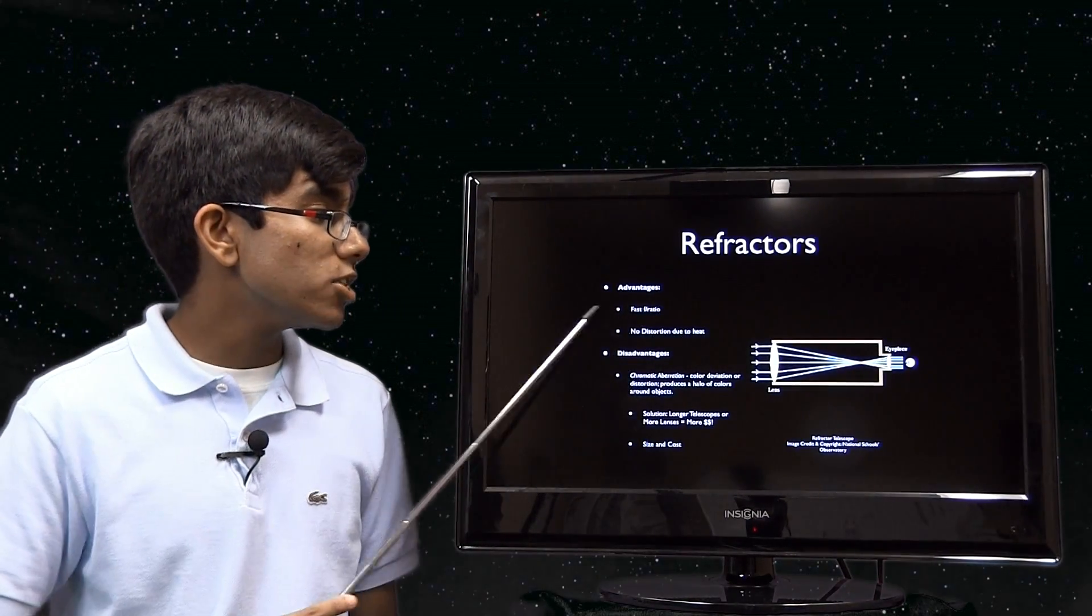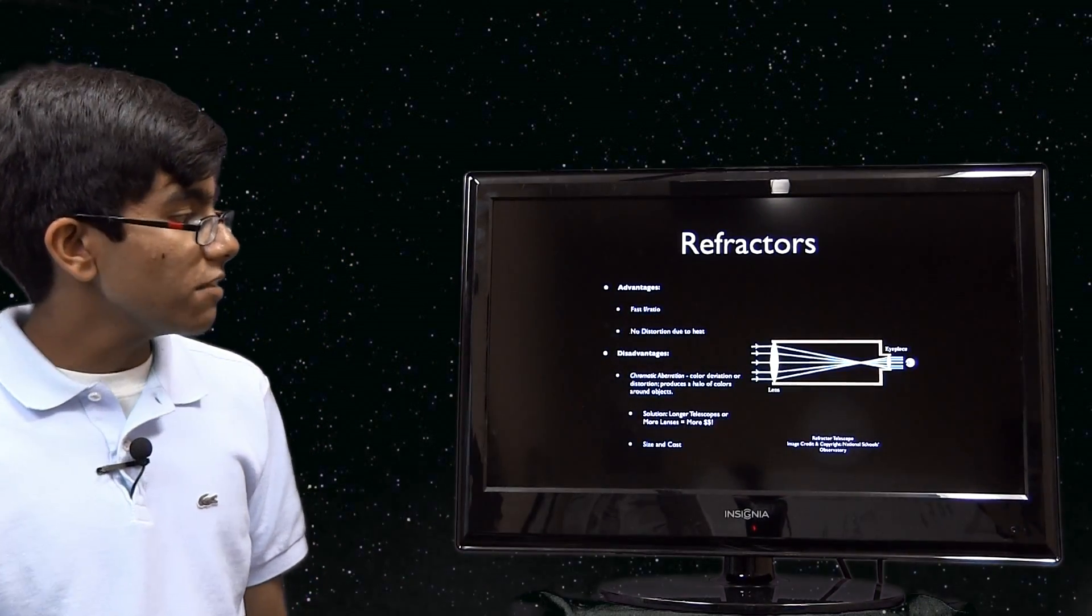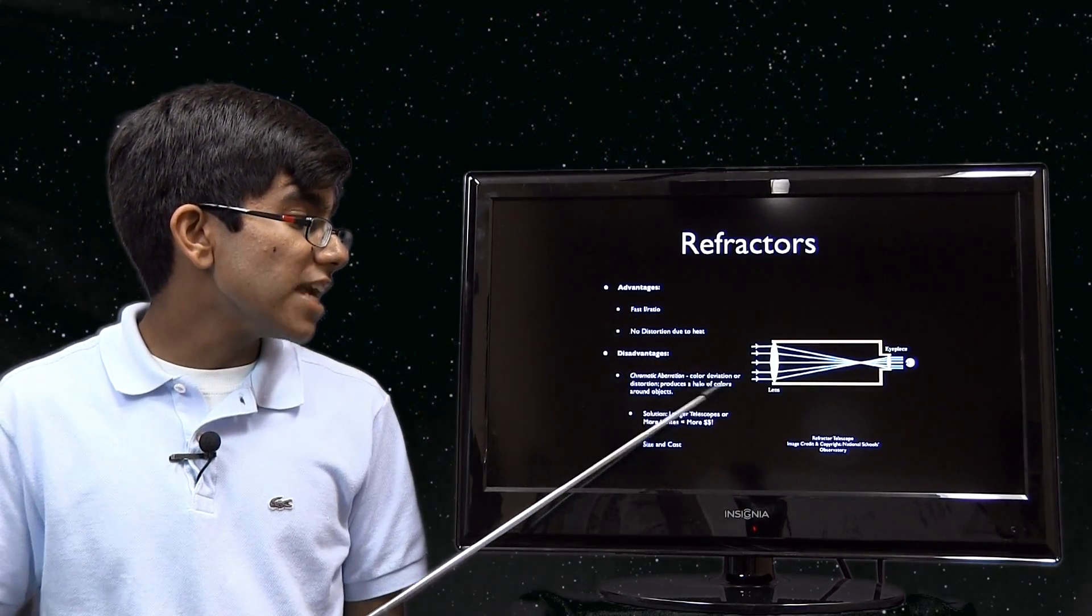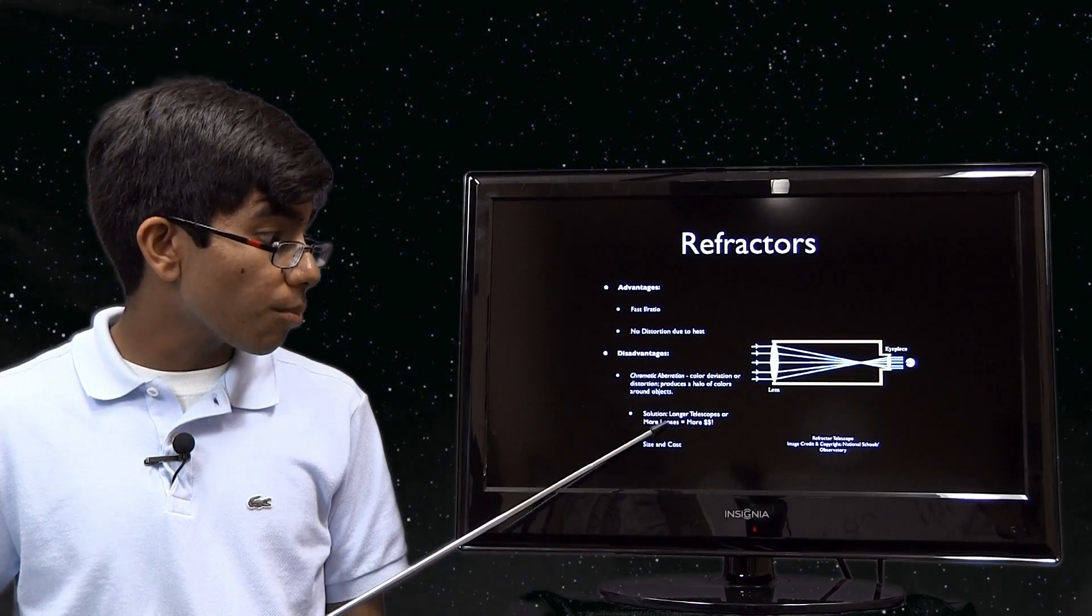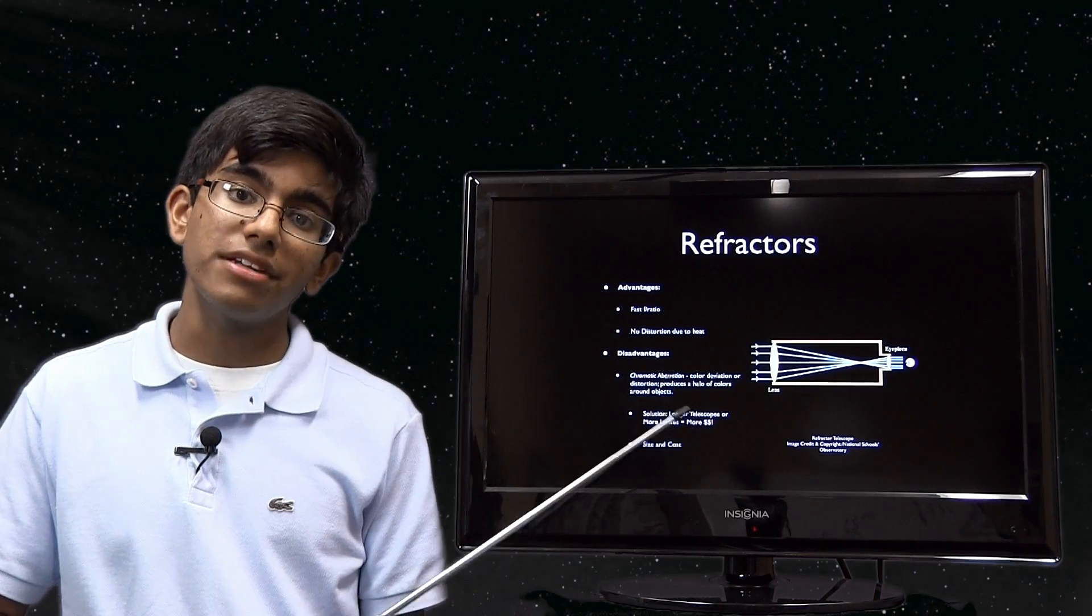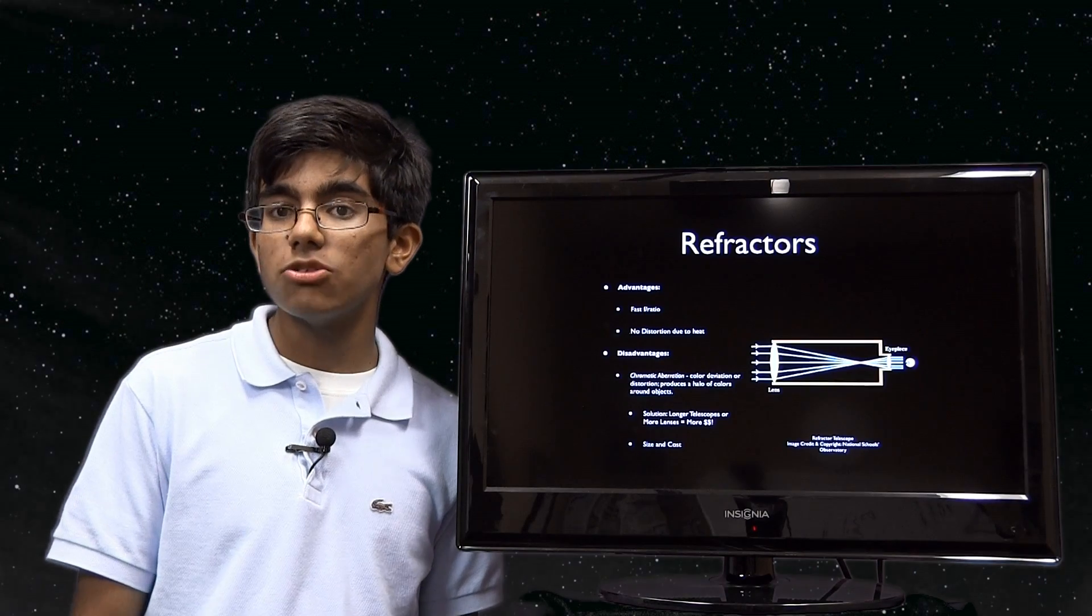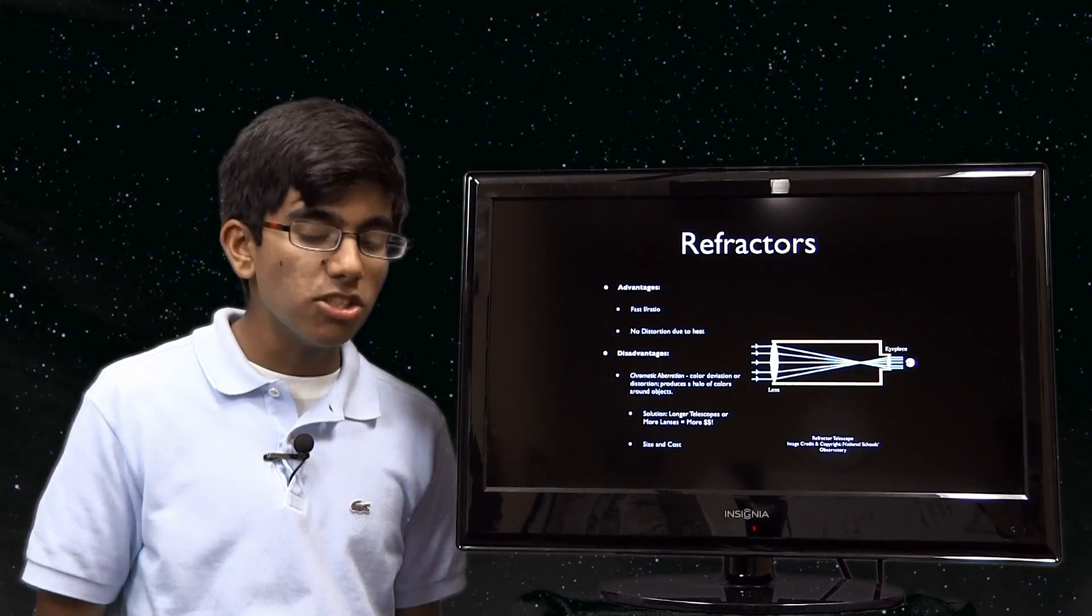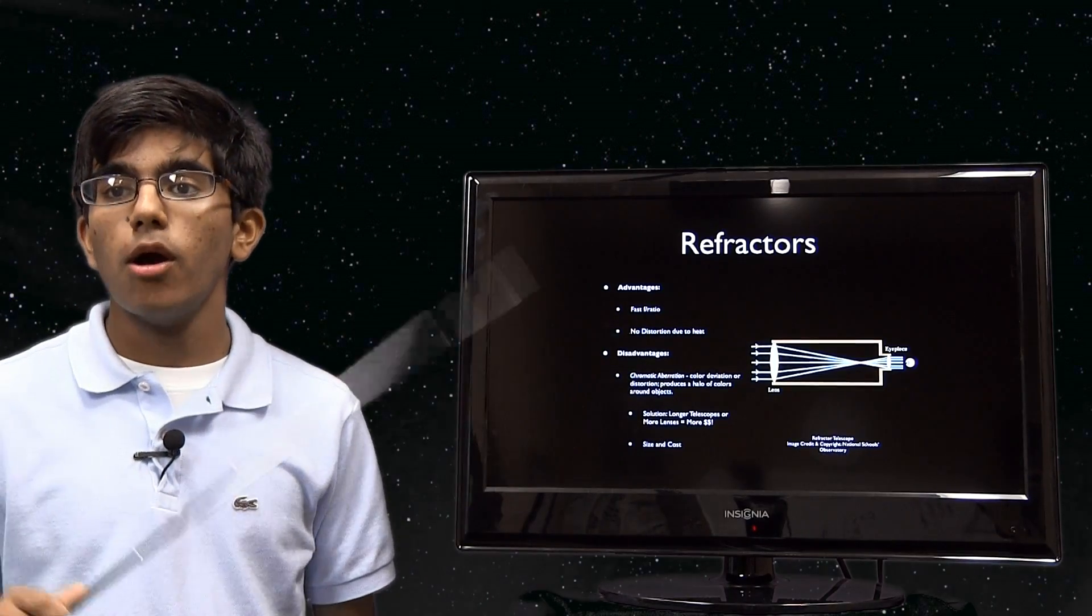Advantages: a fast f-ratio and these telescopes normally don't get hot, so there won't be any distortion. But something that does occur with these telescopes is chromatic aberration—color deviation or distortion that produces a halo of colors around objects. The solution: longer telescopes or more lenses, making it more money. Since most people want one that doesn't feature chromatic aberration, you increase size and cost. That's why back in the old days you would have telescopes 20 feet long, especially Mr. Herschel, I believe. That's how you'd see triplet refractors normally—three different lenses to help eliminate chromatic aberration.